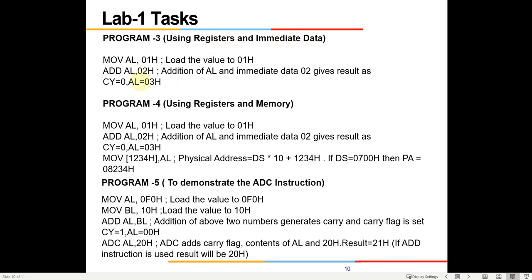These are two different runs which you will do on your own. Similarly, this next one uses registers and immediate data — you move a value into AL and then ADD AL with hexadecimal number 02. You are not specifying a register here; you are directly adding the contents of AL with the immediate value 02. If AL is 01 and you add 02, the answer stored in AL will be 03, and the carry flag will be zero because there is no carry.